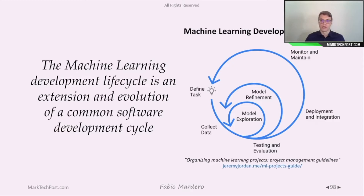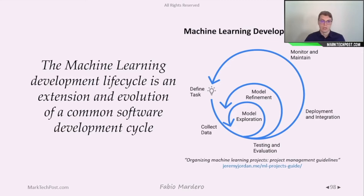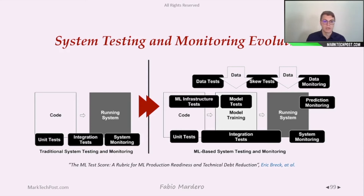While the model is already developed and in the deployment phase, the machine learning development cycle is an extension of what is already done today with software. Here we can see how system testing and monitoring has evolved. In testing and monitoring, we have unit tests, integration tests, and system monitoring — these three main elements remain relevant when talking about machine learning.